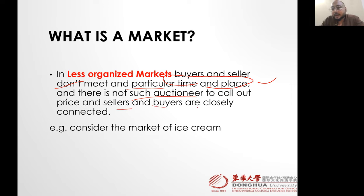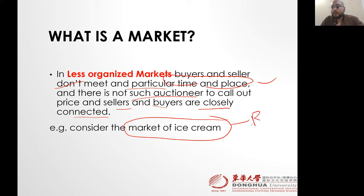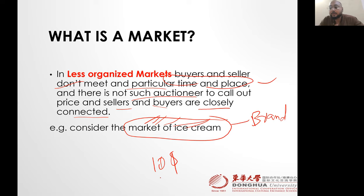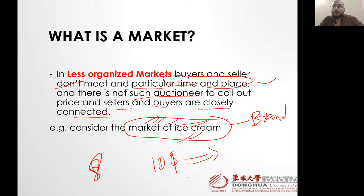Sellers and buyers are closely connected face to face. Consider the market for ice cream — generic ice cream, no branding. If you don't want to pay ten dollars for an ice cream, just go to the next shop and maybe get it for eight dollars. Some people ask about branded ice cream like Häagen-Dazs or Starbucks, but here we're talking about simple ice cream with no branding.